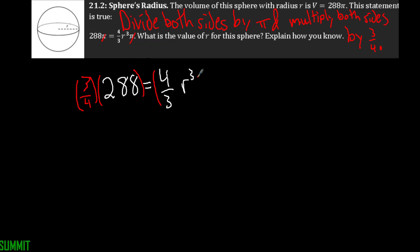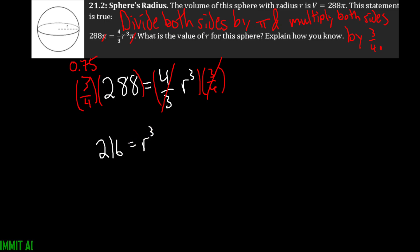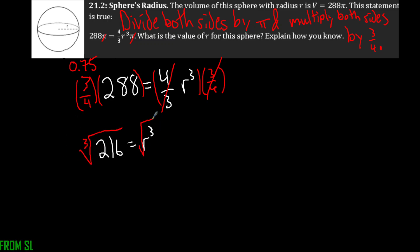Multiplying both sides by the reciprocal three over four, the fractions cancel on the right. On the left, multiplying 288 by 0.75 gives 216. So we have 216 equals r to the third power. To get rid of that exponent, we take the cube root of both sides.